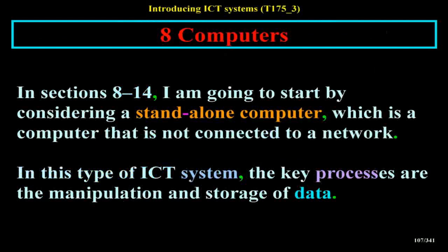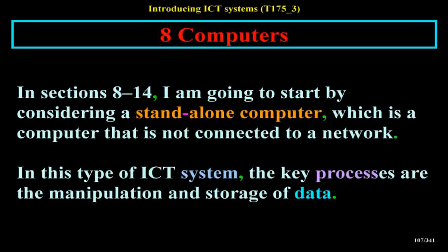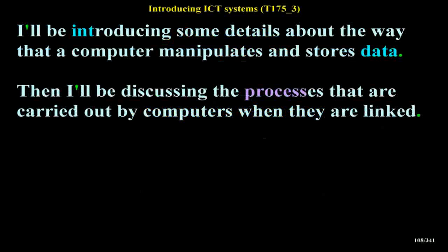In sections 8–14, I am going to start by considering a stand-alone computer — one that is not connected to a network. In this type of ICT system, the key processes are the manipulation and storage of data. I'll be introducing some details about the way a computer manipulates and stores data, then discussing the processes carried out by computers when they are linked.